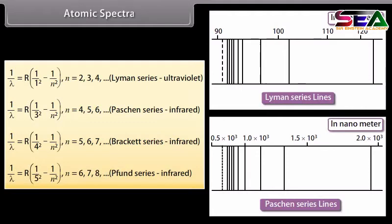The Pfund series is given by: 1/λ = R(1/5² − 1/N²), where N = 6, 7, 8, 9, and so on.